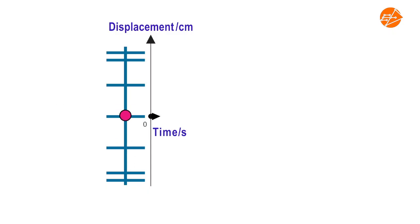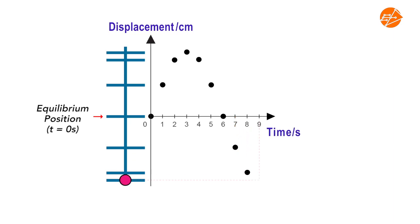Let's see how this motion is represented in a displacement-time graph. At time t equal to 0 seconds, the particle is at its equilibrium position. As the particle moves through a period of 12 seconds, observe how the displacement-time graph is plotted and where the position of the particle is during the motion.